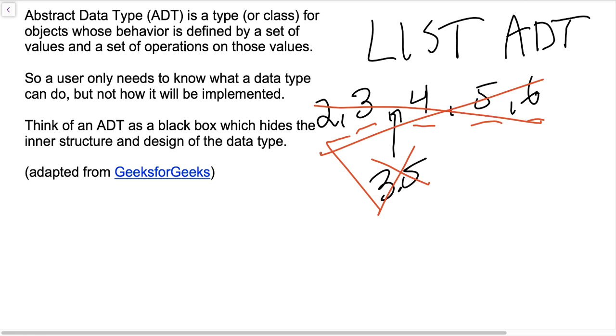Hence the abstract data type part of an ADT. It's abstract. We don't know how this list is actually implemented in the program. All we know is here are the values and here are some operations like add, remove, print, clear, etc. that we can use on those values. So that's what this second and third paragraph here in the notebook is saying. So a user only needs to know what a data type can do, not how it will be implemented. What a data type can do, not how it will be implemented. That's abstracted from the user. So this last part I think is kind of helpful. Think of an abstract data type as a black box which hides the inner structure and design of the data type. And just for getting credit where credit is due, I adopted these three statements from a site called geeksforgeeks.com, which is a really great site for all things related to computer science and programming.